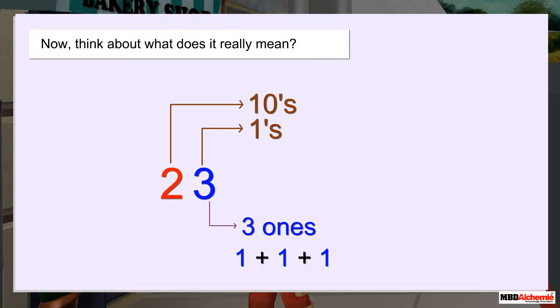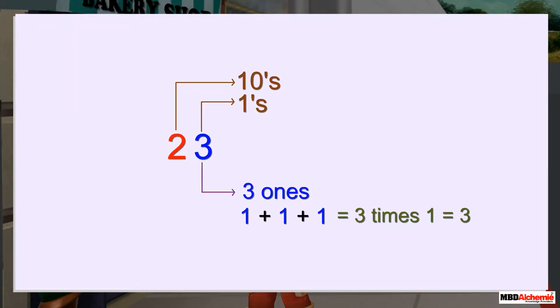We can also say it as three times one. What does the two represent? It represents two tens. Ten plus ten makes two tens.